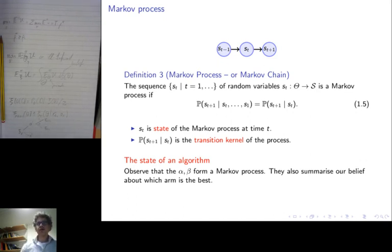Now observe that we had alpha and beta parameters in our algorithm for calculating the current belief. This is basically a Markov process because the value of these parameters depend only on current values and on value observed. So let's summarize our belief about which arm is the best.